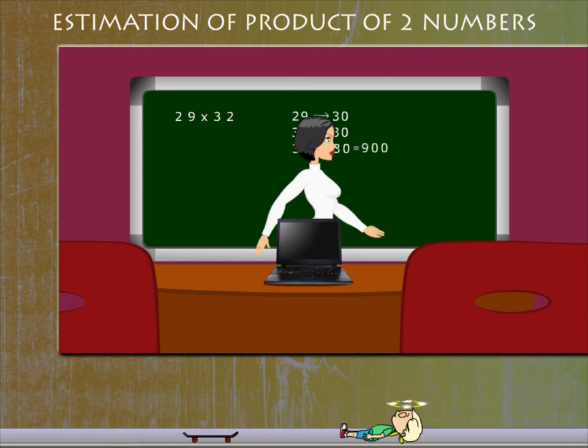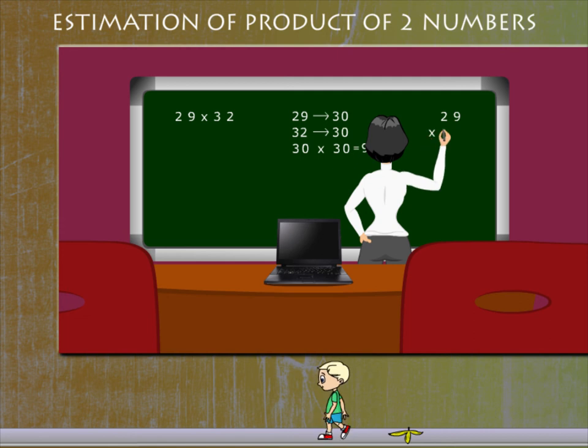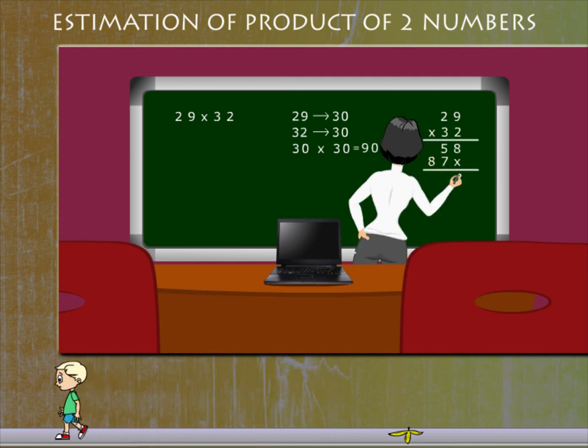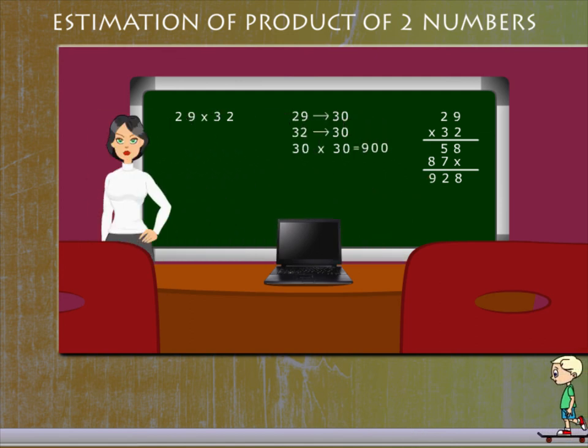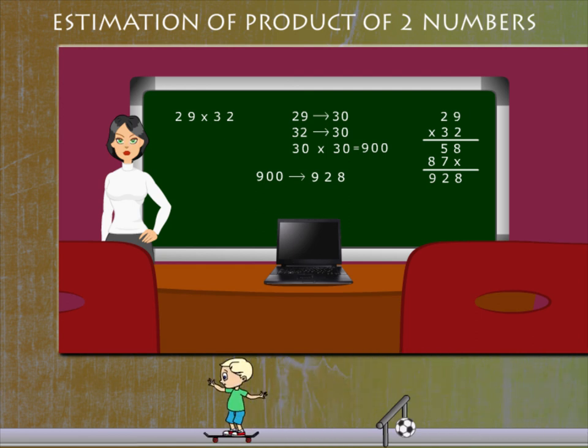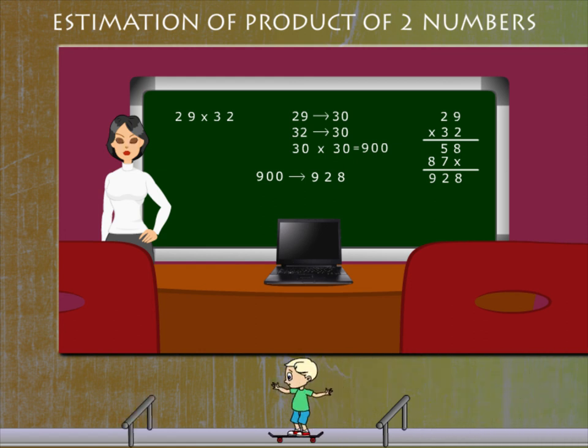She gets 900. She then calculates the exact product: 29 × 32 = 928. Sometimes we don't need the exact product but an estimate, so we round off the numbers. 900 is approximately the same as 928. Lucy sure has many tricks up her sleeve!